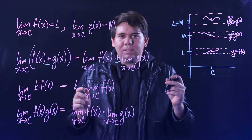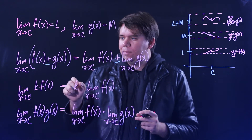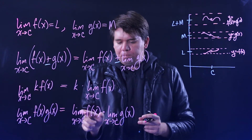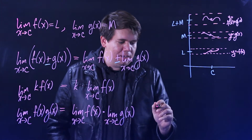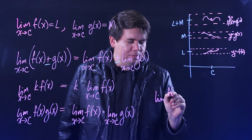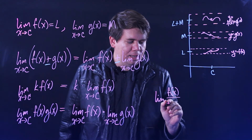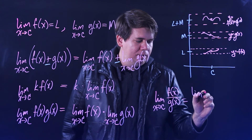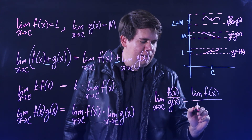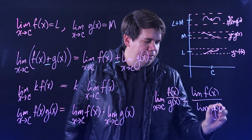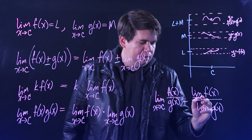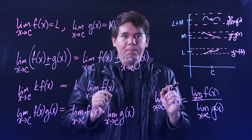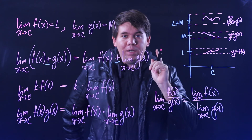So it seems like you can just carry the limit through: the limit of a sum is the sum of the limits, and the limit of a product is just the product of the limits. That might lead you to think that similarly, the limit of F of X divided by G of X should just be the limit of F divided by the limit of G — and that would be a reasonable guess, and it's almost true.